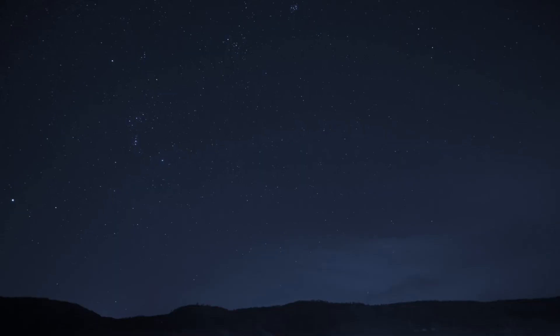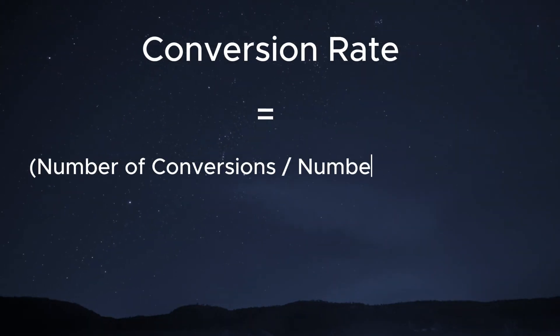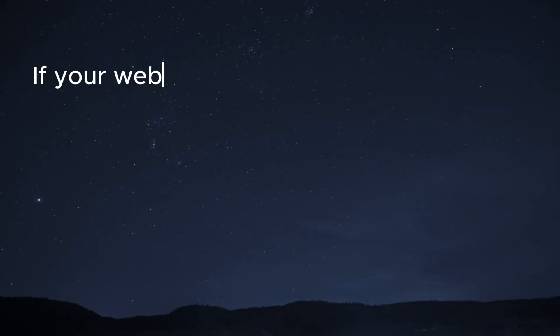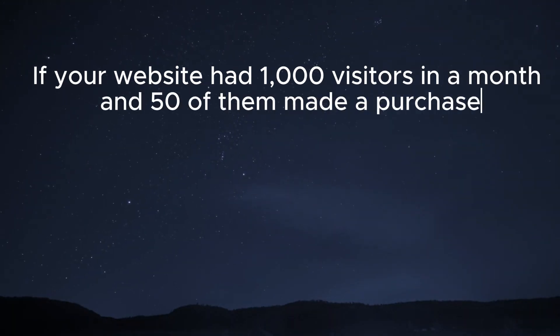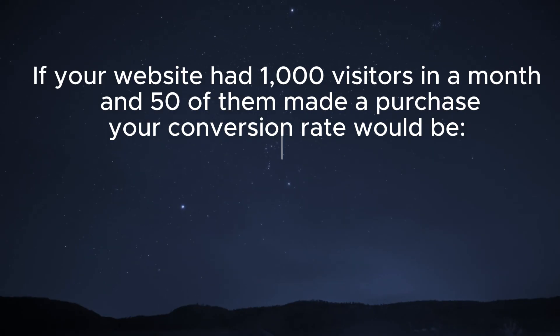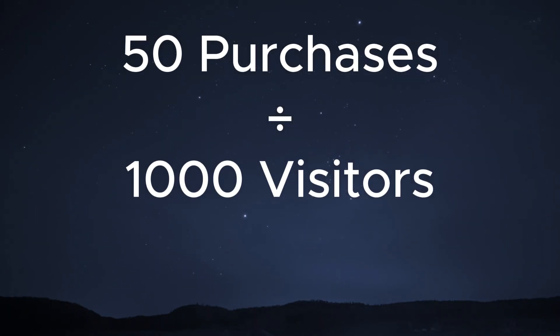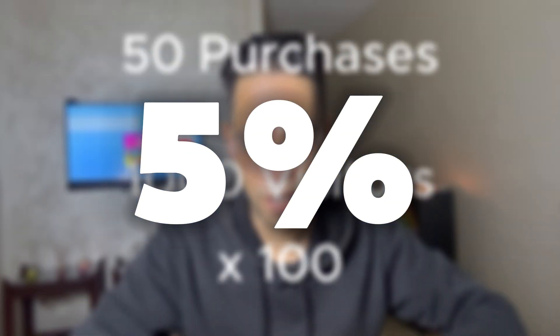It's calculated as the percentage of visitors who completed a desired action such as making a purchase, subscribing to a newsletter, or filling out a contact form. Since we're talking about e-commerce, we're focused on making purchases. The formula is: conversion rate equals the number of conversions divided by the number of visitors, multiplied by 100. For example, if your website had 1,000 visitors and 50 made a purchase, that's a 5% conversion rate.